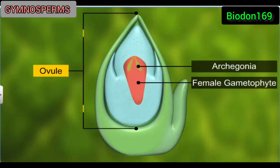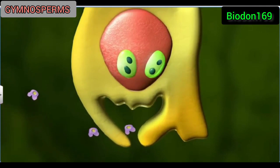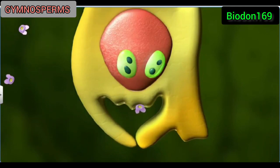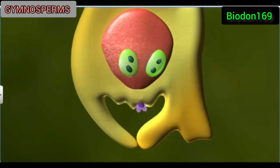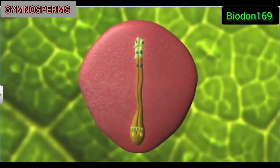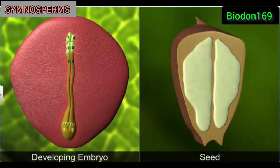The development of archegonia is followed by the fertilization process, during which pollen grains released from the microsporangium are carried by air currents and come in contact with the micropyle — an opening in the ovules. A pollen tube sprouts from the pollen grain and grows towards the archegonium, where it discharges the male gametes. These gametes fuse with the egg to form a zygote. Post fertilization, the zygote develops into an embryo, and the ovule into a seed.